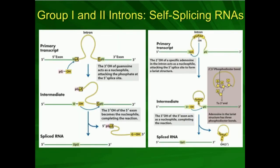The guanosine cofactor's 3' hydroxyl group attacks the phosphate of the exon, breaking off the intron. Now we have a free exon, and the free 3' OH of that exon is going to attack the 5' phosphate of the second exon in the series. Remember we have the pattern: exon, intron, exon, intron, and so forth. Between these two exons we have this intron that was partially released. So the free 3' OH of the first exon attacks the 5' phosphate of the second exon, ultimately resulting in the release of the intron, and we've successfully linked the two exons together.